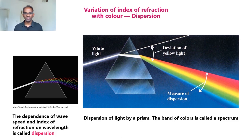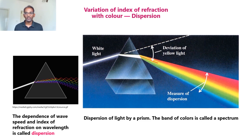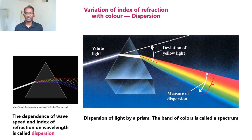The deviation produced for a particular frequency is the angle between that ray and the direction of propagation. For example, for yellow light, this angle is the deviation produced for that color. The deviation produced for a particular frequency increases with the refractive index and also with increasing frequency. That means violet light is deviated most compared to red light. When the beam comes out of the prism, it has a fan-like shape, and we say the beam has been dispersed into its spectrum.